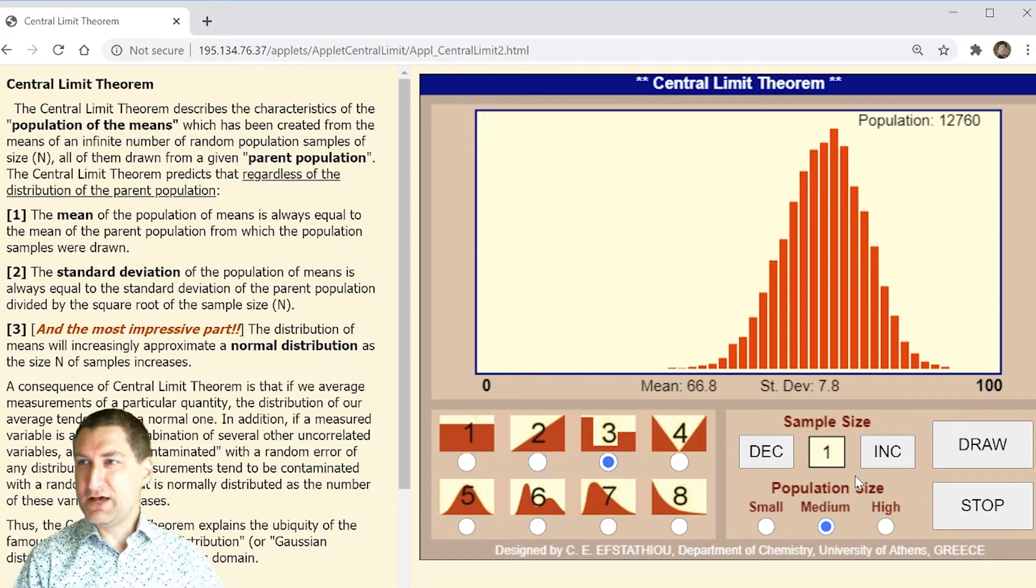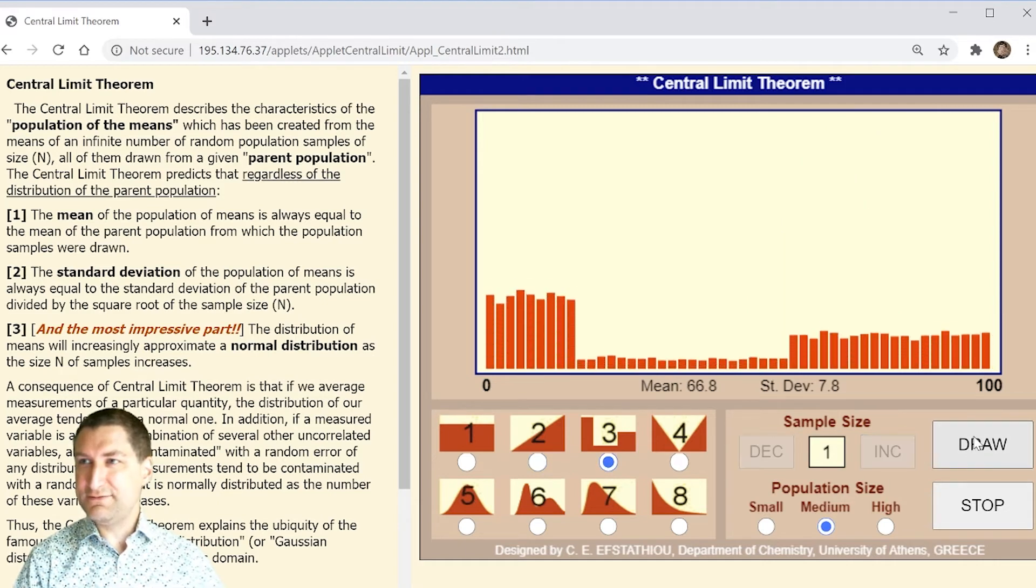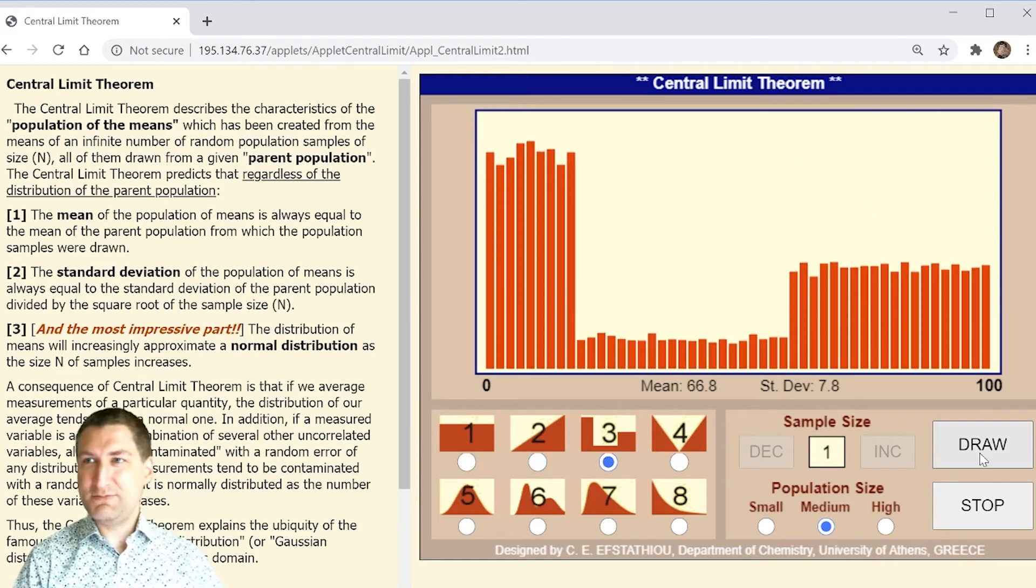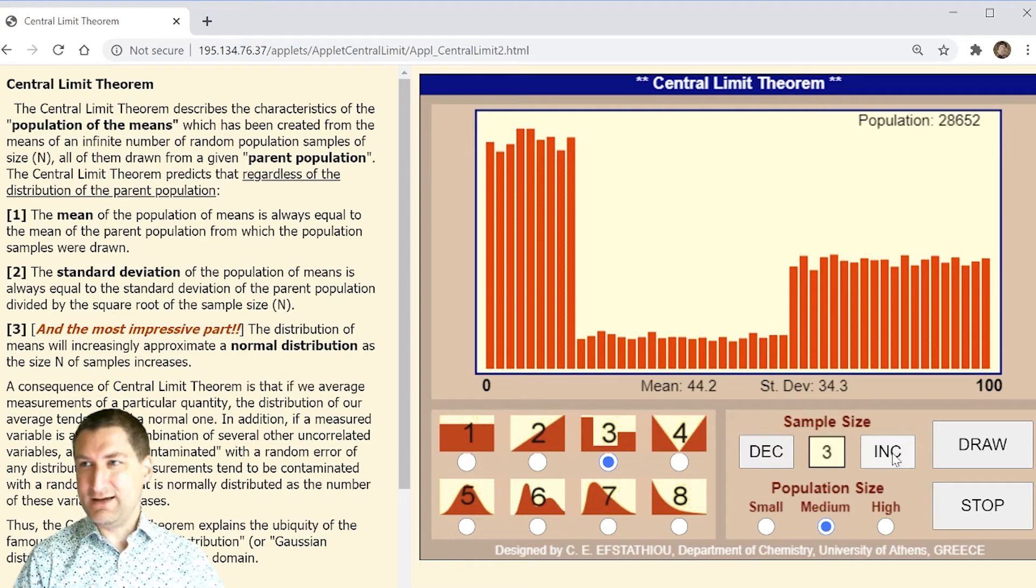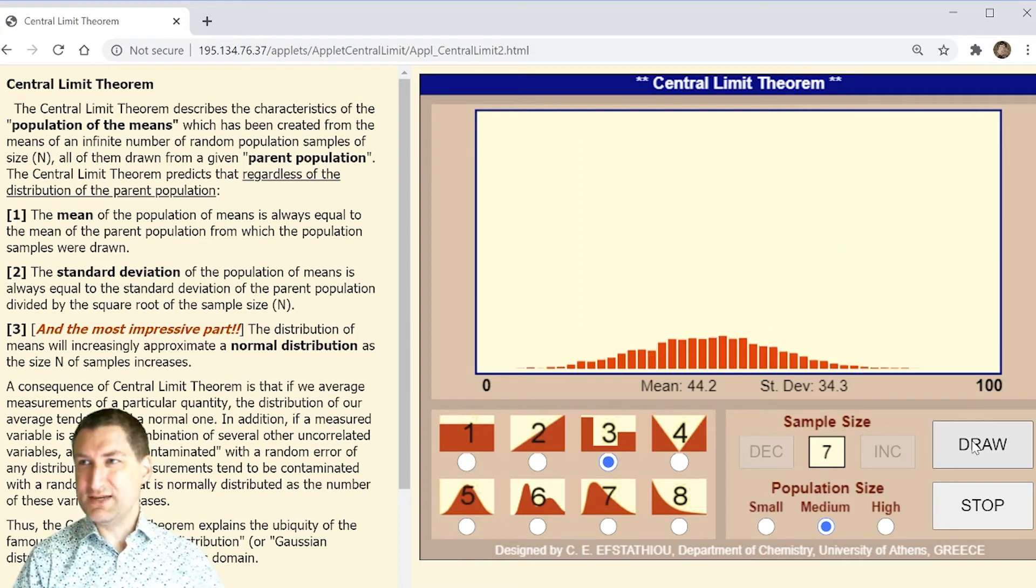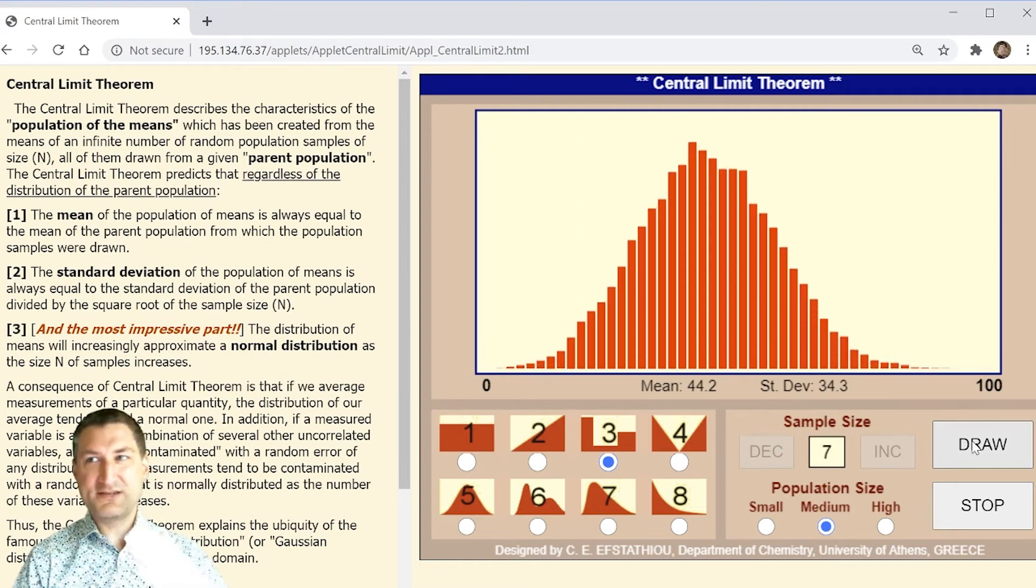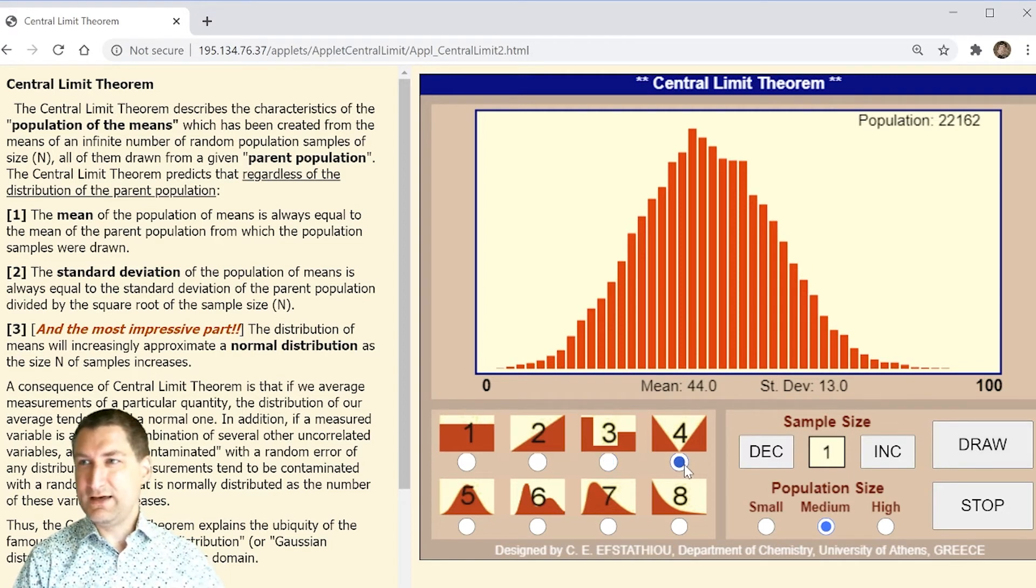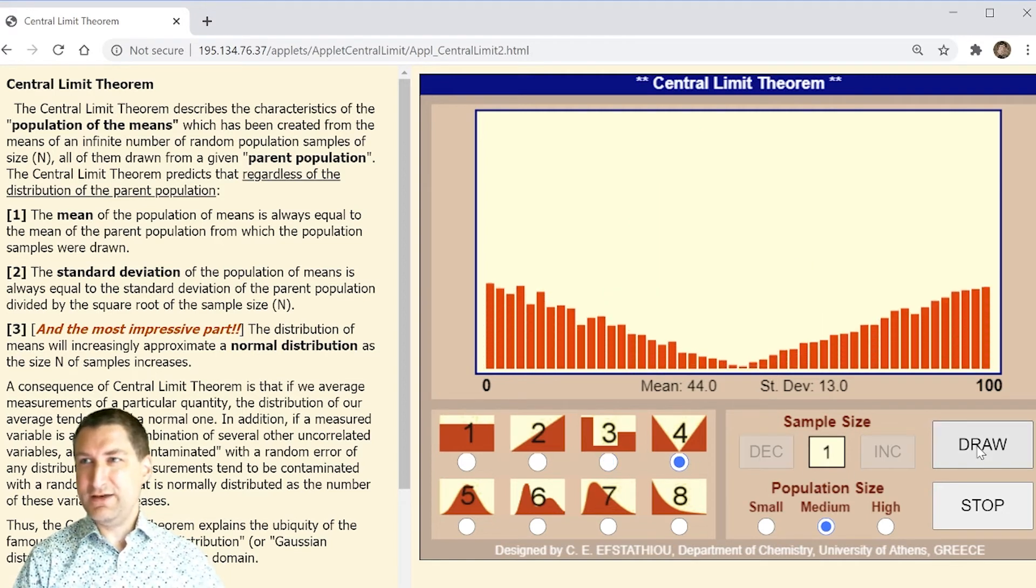Here's another example with a weird PDF that is kind of like a stair-steppy function. Again, I'm just going to add up seven of those things, and already that stair-steppy stuff kind of goes away.